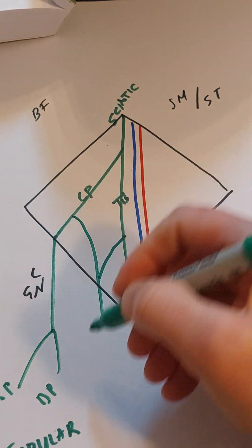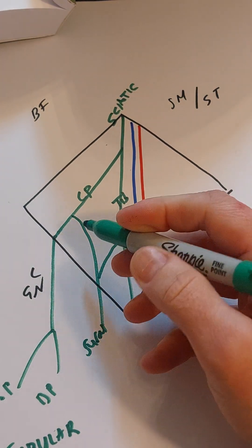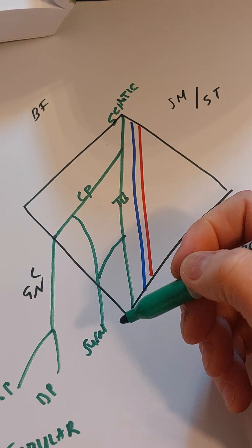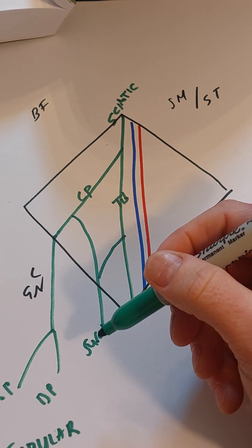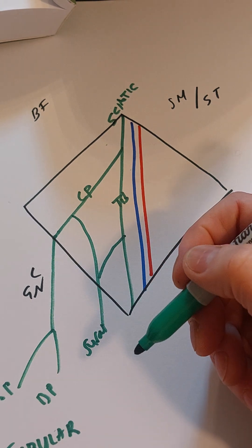And then you have the sural nerve. The sural nerve can actually come from either side or it can come a bit from both. When I do regional anaesthesia I can often see the sural nerve as a branch, but I can't tell where it comes from specifically.